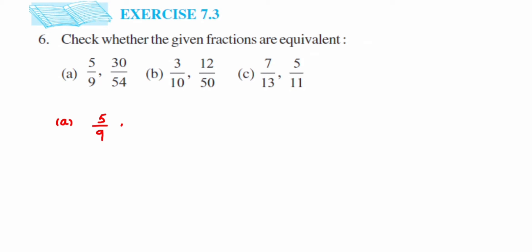If you notice, to get from 5 to 30, we're multiplying. Similarly in the denominator we're also multiplying. If you multiply with 6, we get 30, and with 9 also multiply with 6, we get 54. So here I'm multiplying the numerator and denominator with the same number, that is 6.